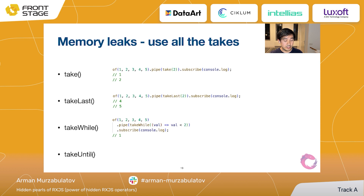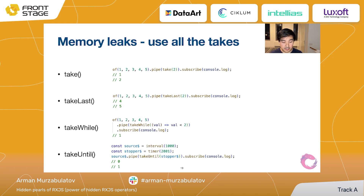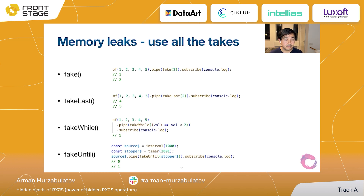It's good to mention that with `takeWhile`, even if 1 appears again later in the array — say [1, 2, 3, 4, 1] — the last 1 would not be emitted because the observable was already unsubscribed when 2 was reached. The last take operator is `takeUntil`. Basically you have a source observable, then another observable — the source keeps emitting values until the second observable emits something. In the example, we have an interval observable and a stopper. After 2001 milliseconds the stopper emits, and the interval automatically unsubscribes. You can see it emits 0 and 1, then after two seconds it unsubscribes.